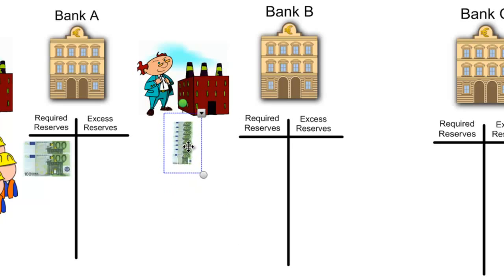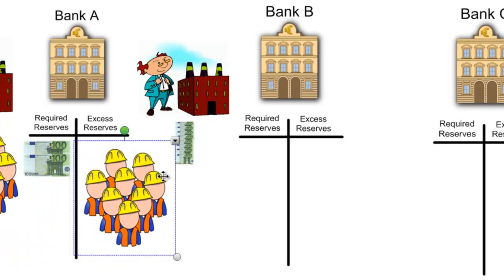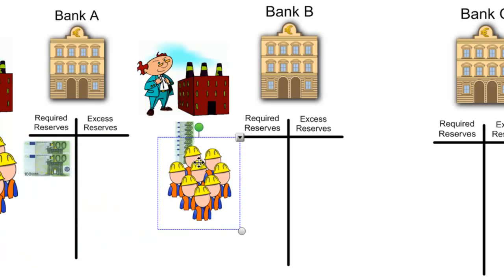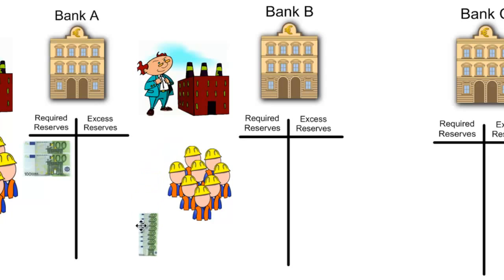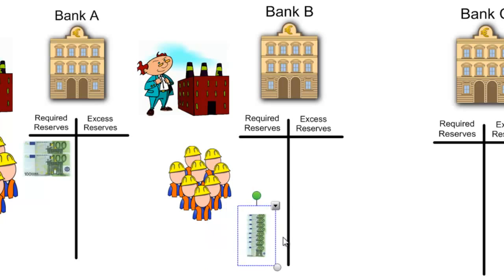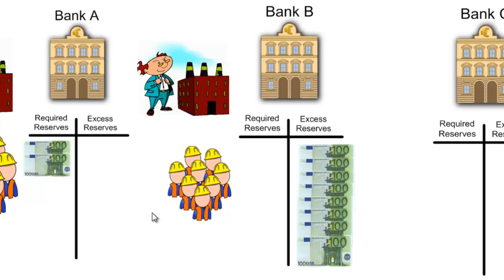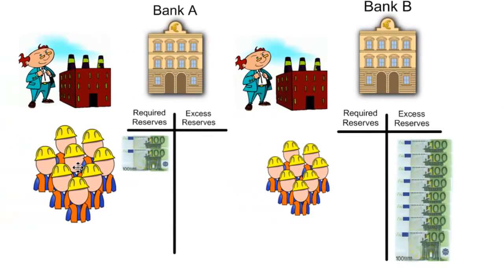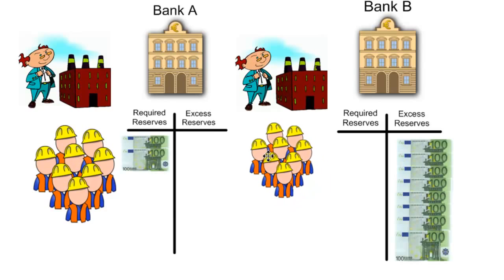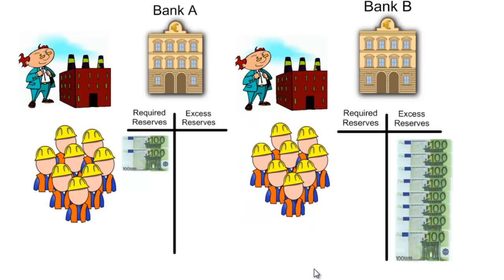This 800 euros will go towards the production of goods and the employment of more workers. The 800 euros will cover the production costs of this new factory, will be paid to the workers who will then spend some and save some, and ultimately the 800 euros will end up being deposited into other banks in the economy, represented by Bank B. The 1,000 euros earned by the workers in the first factory will therefore ultimately lead to an additional 800 euros of money being created through the fractional reserve banking system.